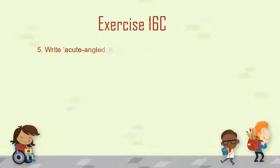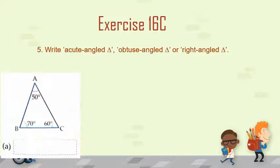Now let's come to question number 5: write acute angle triangle, obtuse angle triangle, or right angle triangle. The first figure is triangle ABC where angle A is equal to 50 degrees, angle B is equal to 70 degrees, and angle C is equal to 60 degrees. In this triangle ABC, all the angles are less than 90 degrees, meaning all the angles are acute angles. A triangle in which all the angles are acute angles is called an acute angle triangle, so we write acute angle triangle in the box.